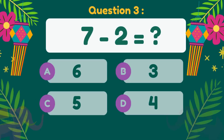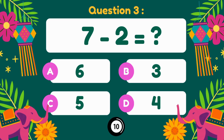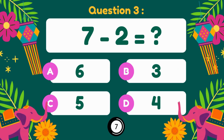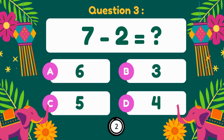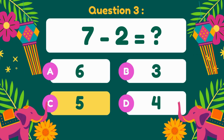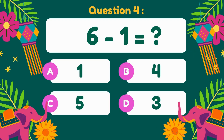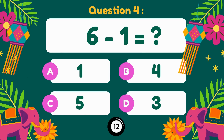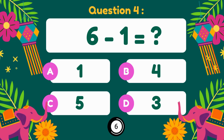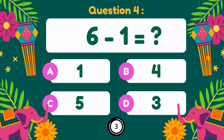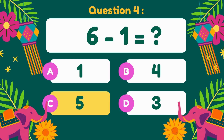7 minus 2. 7 minus 2 is 5. 6 minus 1. 6 minus 1 is 5.